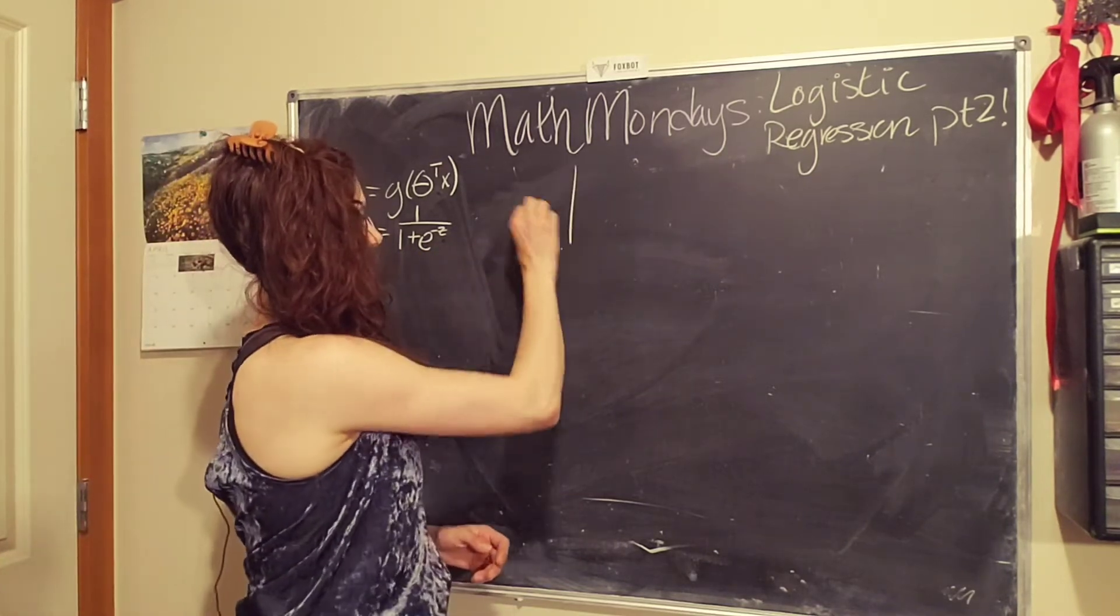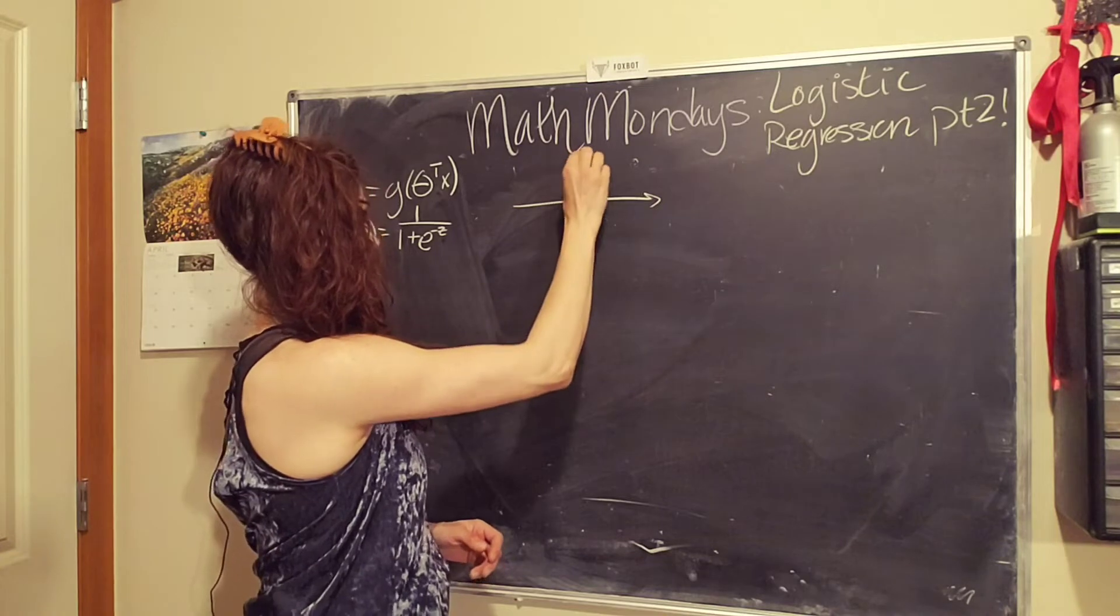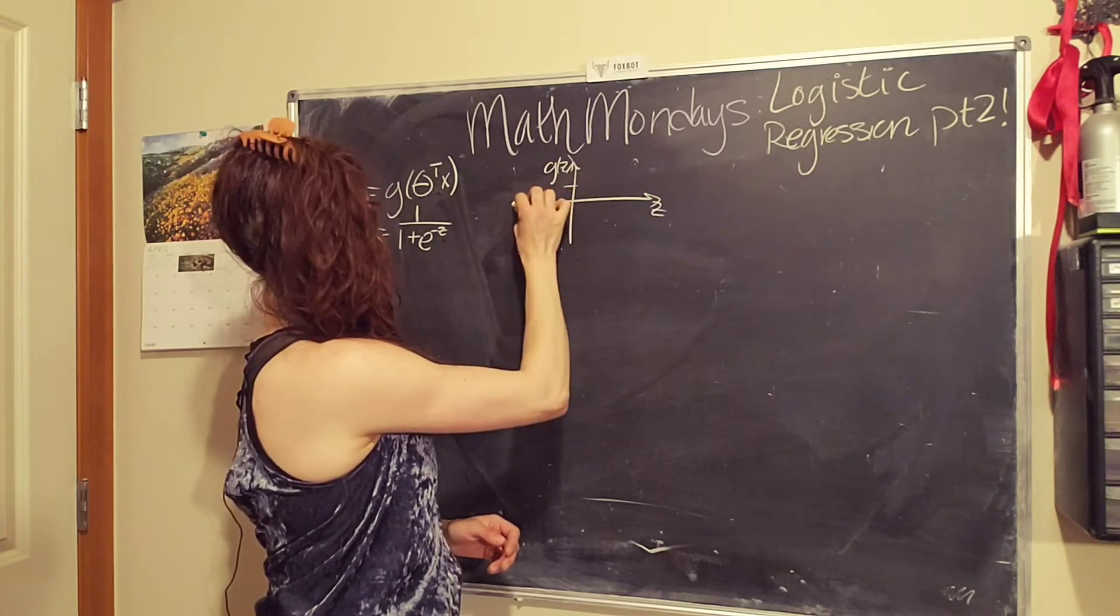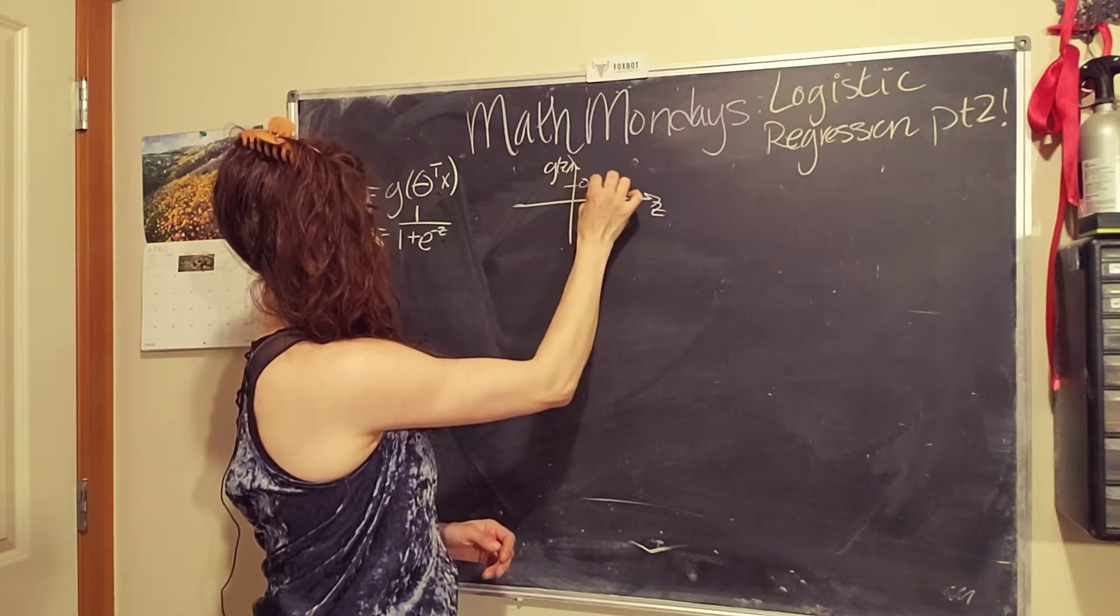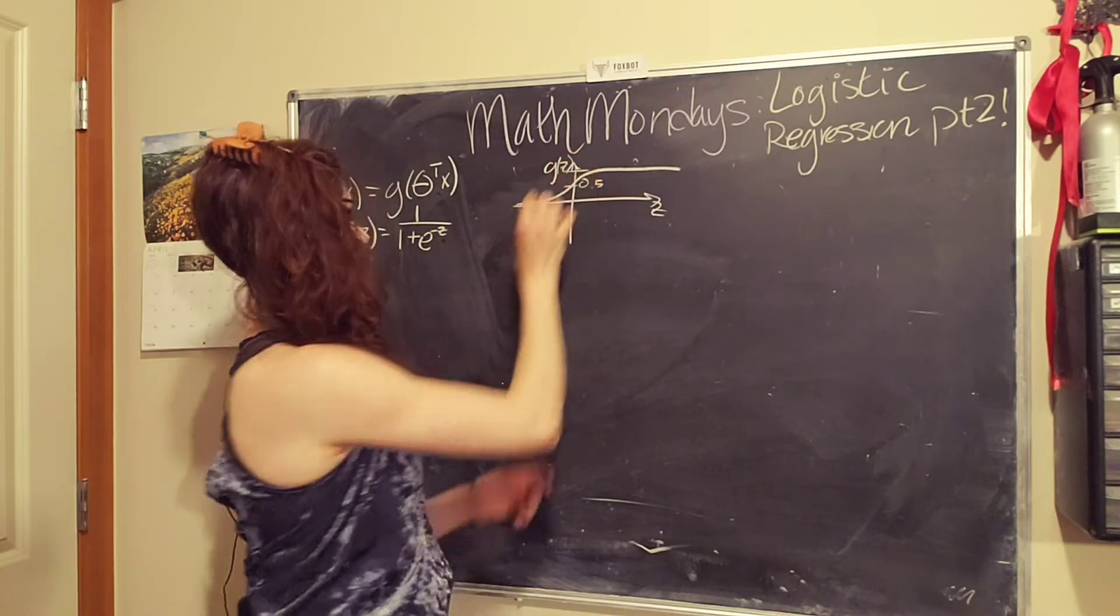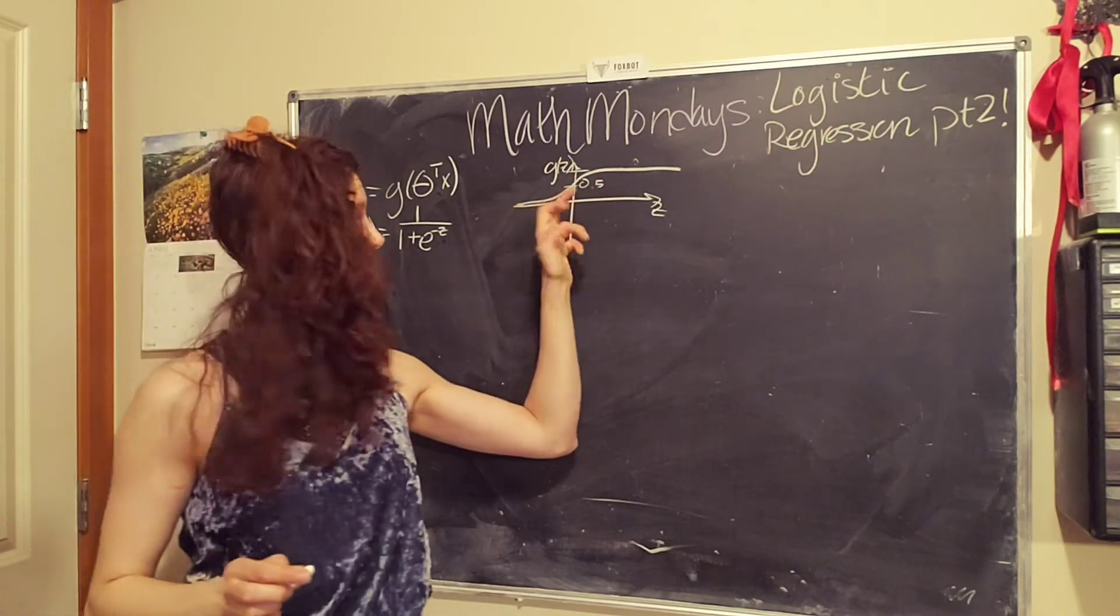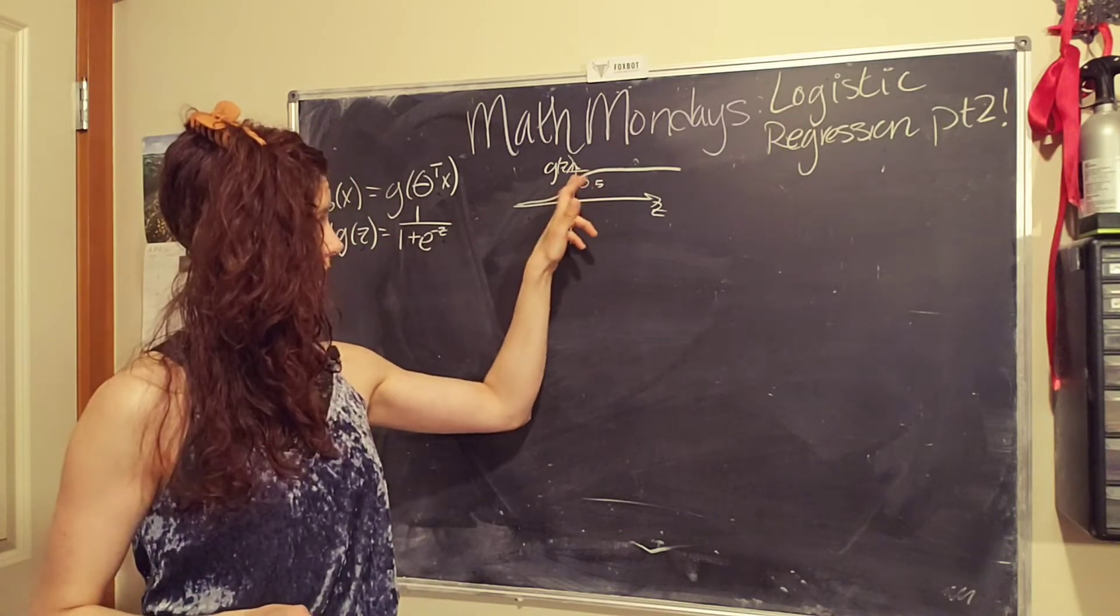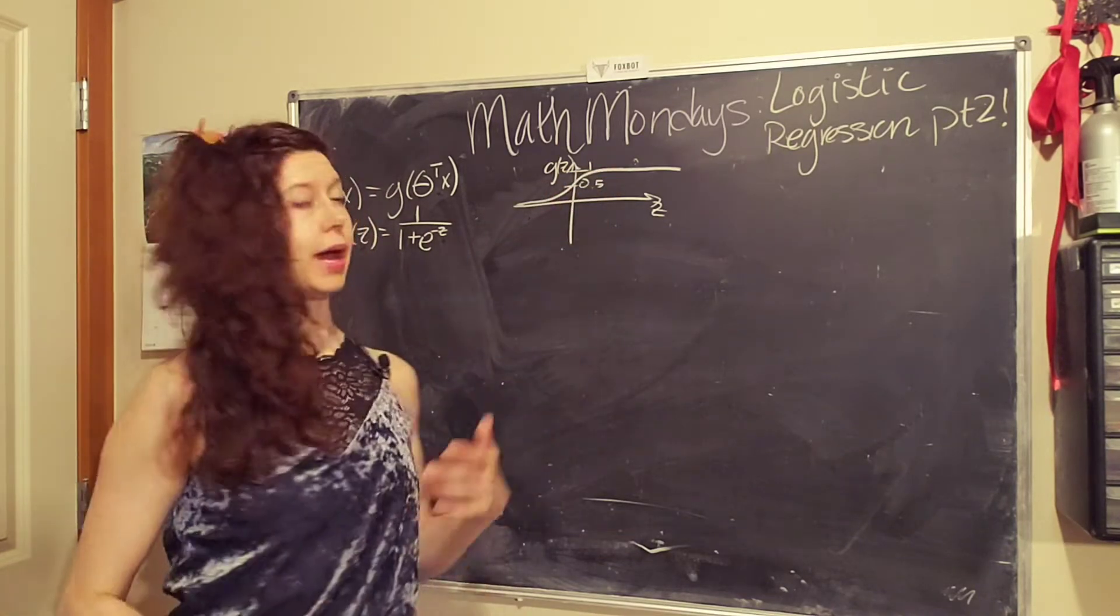So when we plot g of z, like so, we get a, this is 0.5 or one half, we get a thing that looks like this. So there's asymptotes at zero, it crosses the vertical axis at one half, and there's an asymptote at one.